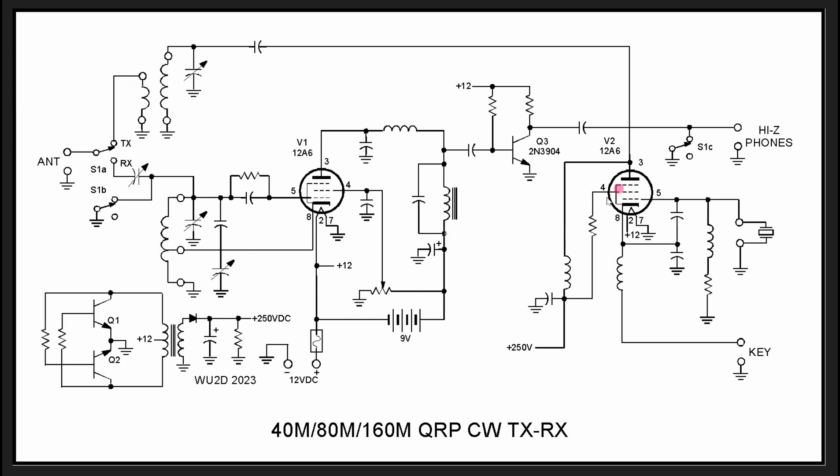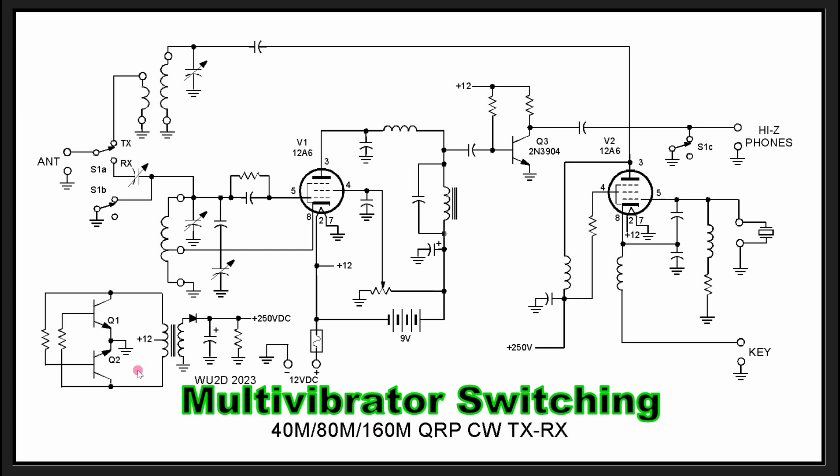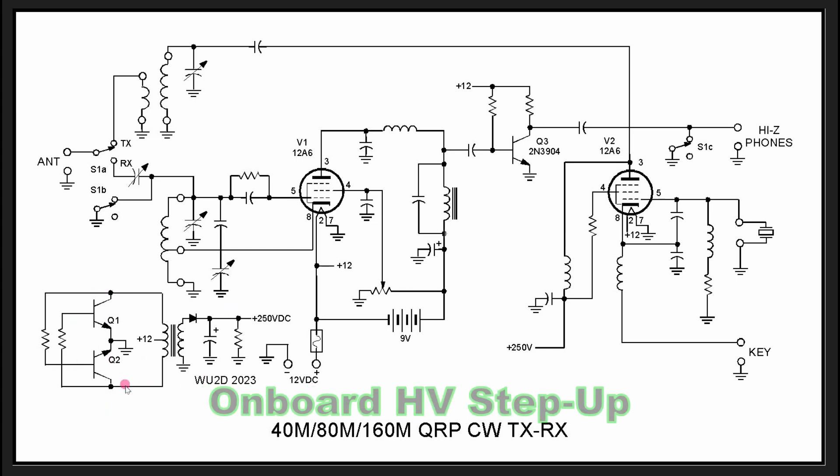So also, what else is clever here? Oh, we have this on-board multi-vibrator power supply. This is off-board in the Paraset, by the way. They make the high voltage with a vibrator supply. He's using a multi-vibrator, a very simple multi-vibrator, and producing high voltage for the transmitter, which is completely separate from the receiver.